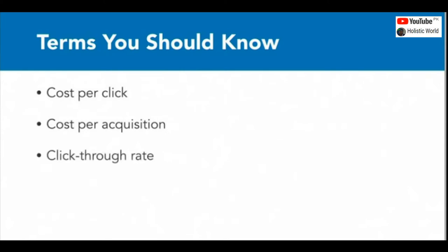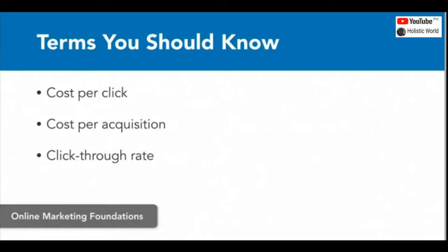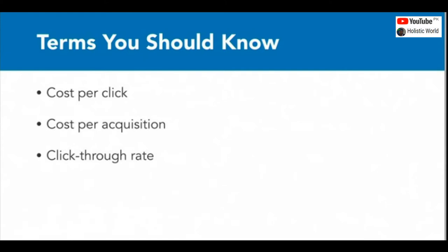Throughout this course, we'll be using terminology specific to online marketing and advertising. As we encounter new terms and concepts, I'll do my best to explain them, but I'm going to assume that you have a foundational understanding of terms such as cost per click, cost per acquisition, click-through rate, and so on. If you'd like to brush up before advancing deeper into AdWords, take a look at chapter two of my course, Online Marketing Foundations. I spent a few minutes outlining most of the concepts we'll be encountering in this course.